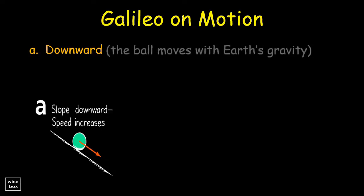Here are his observations. When it's downward, the speed of the ball increases. The concept of gravity was still not introduced during that time, but we all know now that this ball moves with earth's gravity.